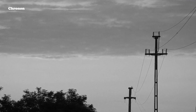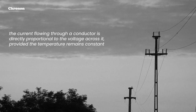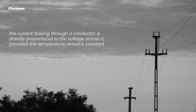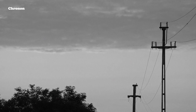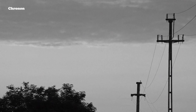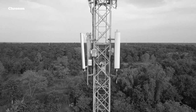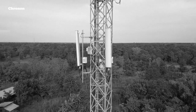George Ohm's insight was revolutionary. He discovered that the current flowing through a conductor is directly proportional to the voltage across it, provided the temperature remains constant. Additionally, he introduced the concept of resistance, indicating how materials impede the flow of electrical current.